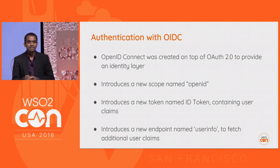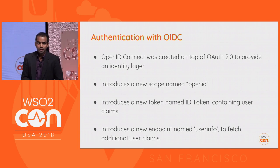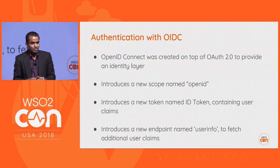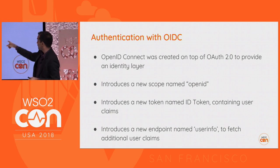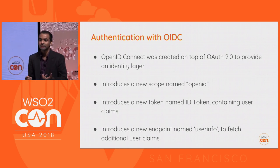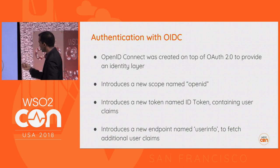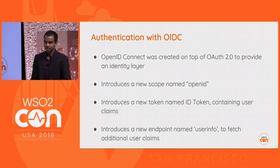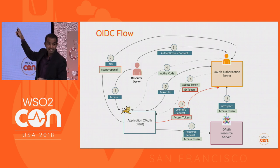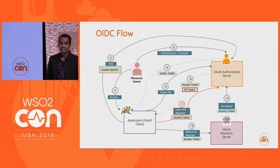OAuth 2.0 is about authorization, not authentication. From an OAuth access token, you can't figure out who the user is — it's mostly opaque. So there's a gap. OIDC — OpenID Connect — came into the picture to provide an authentication layer on top of OAuth. It introduced a new token called the ID token, a JWT containing all the user claims, so the client application knows who the user is. It also introduced a new user info endpoint where that token can be used to get additional information from the OAuth server. You get an ID token for authentication and an access token for authorization.